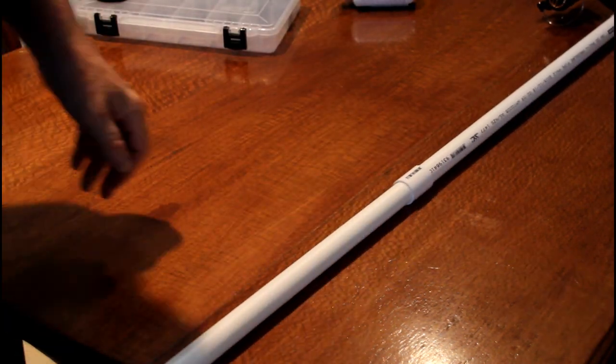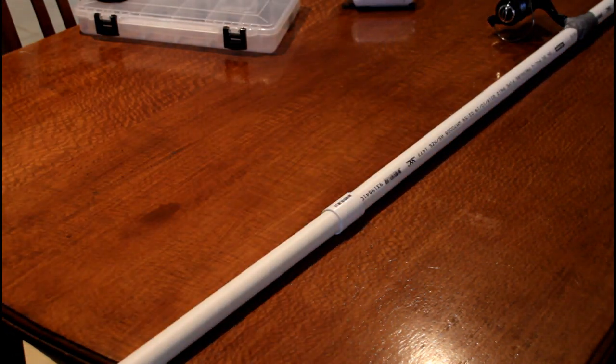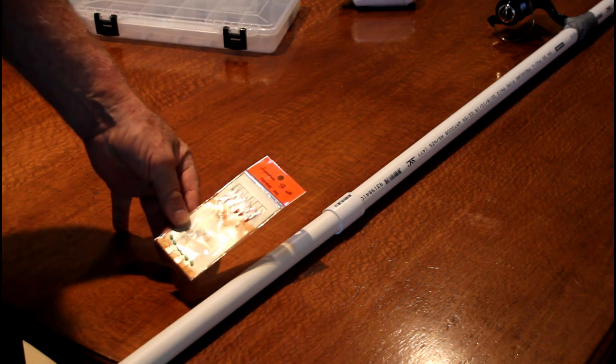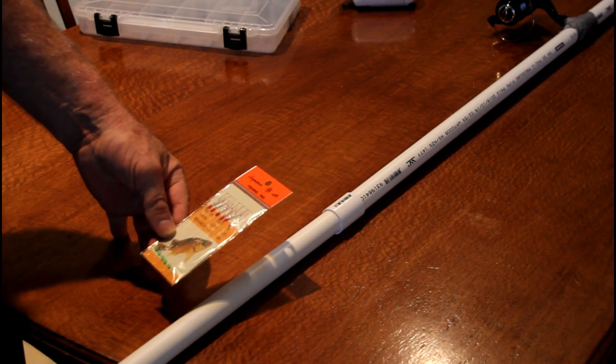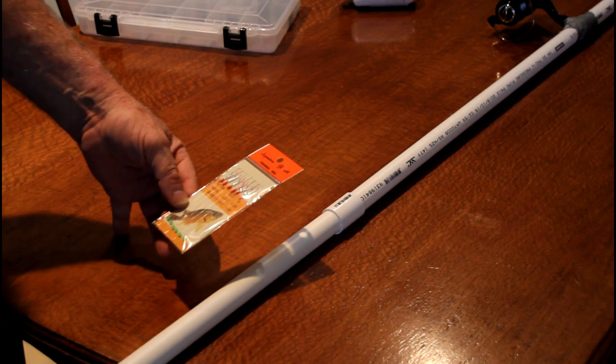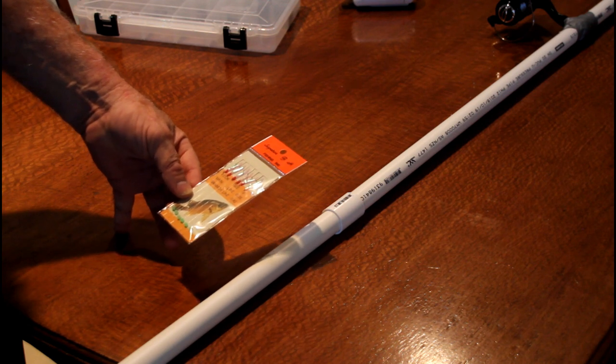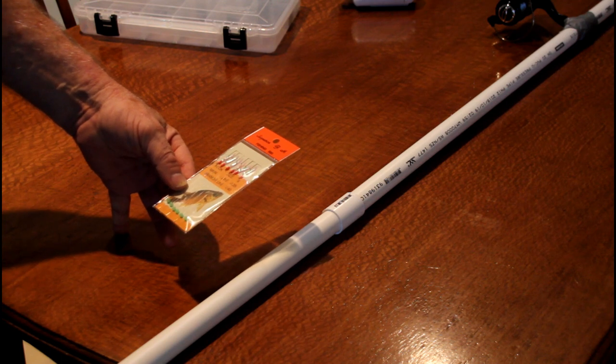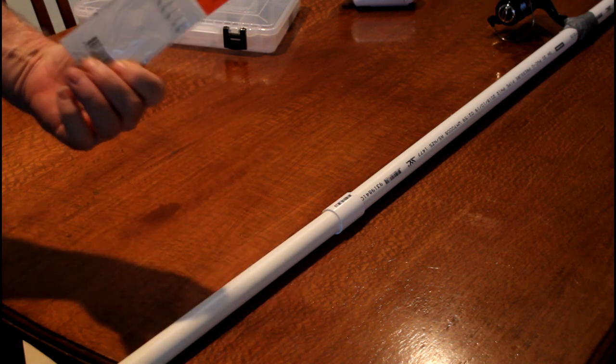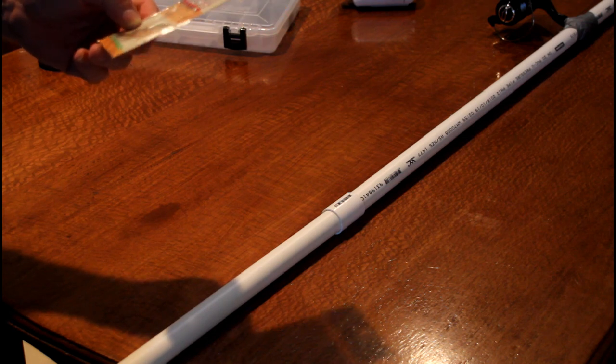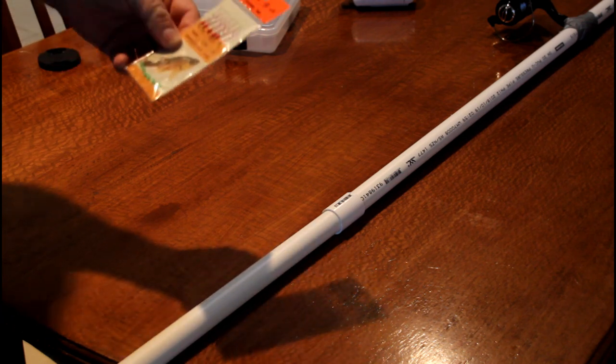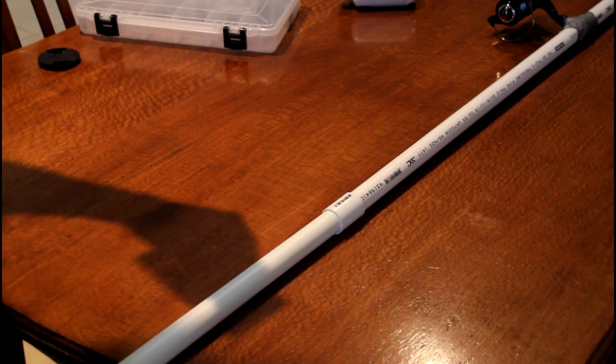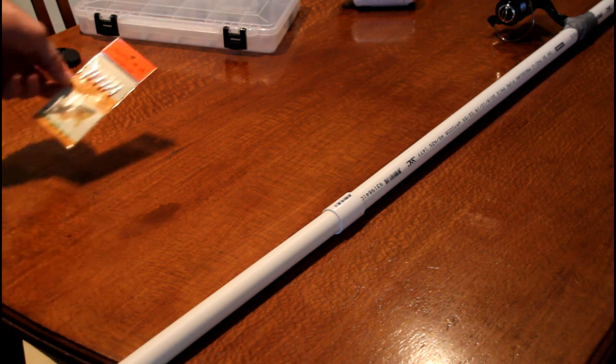Now the next thing to do is to get a sabiki rig on there and a sinker. A sinker that's usable with the sabiki rig that is. Not the one I just used to get the line through. This sabiki rig arrived for me today. It's got six hooks on it. They're size six. And the main line is 0.35 and the branch lines are 0.4. It's a bit of a trick for getting these sabiki rigs out and getting them on without ending up in a massive tangle. It's not that hard once you know how. I'll do a video at some stage to show you how to do that. In the meantime I just want to get it on and try this rod out.